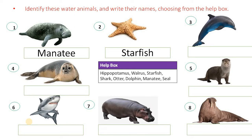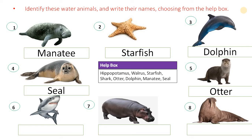Number 3, Dolphins. Dolphins are highly intelligent mammals. Number 4, Seal. Number 5, Otter. Number 6, Shark.